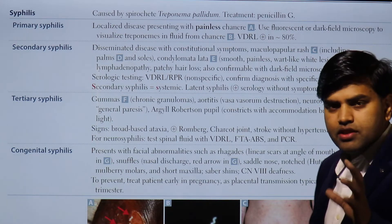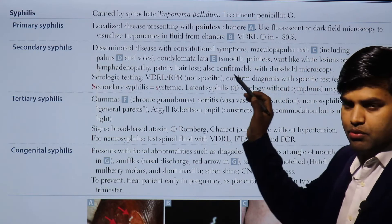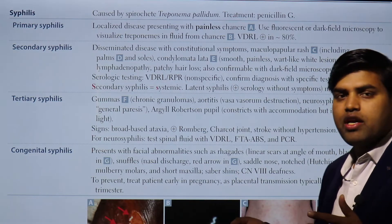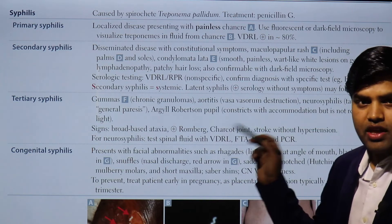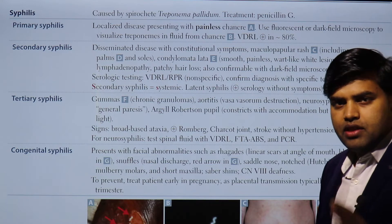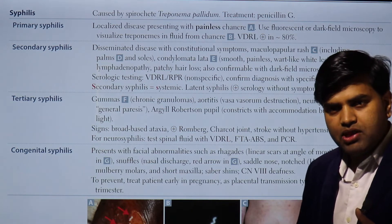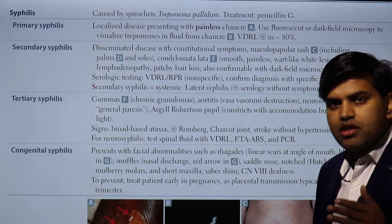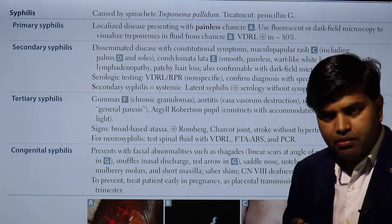Syphilis is caused by the spirochete Treponema pallidum. We have discussed spirochete organisms including Borrelia and leptospira; now we are discussing the third important one, Treponema pallidum. Treatment is penicillin — penicillin G, or even long-acting penicillin like benzathine penicillin, depending on the stage of syphilis.